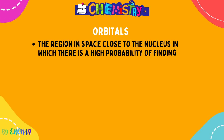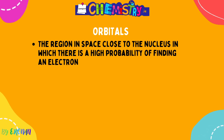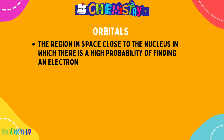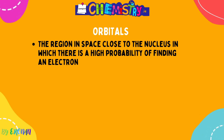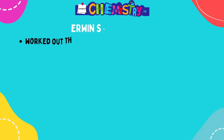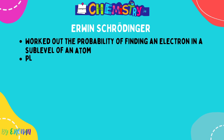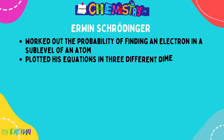Orbitals are defined as a region in space close to the nucleus where there is a high probability of finding an electron. We will talk more about orbitals when we move on to Erwin Schrödinger and his s and p orbitals, which he devised using mathematical equations. For now, we can only refer to a region where there is a high probability of finding an electron, and not a fixed location.